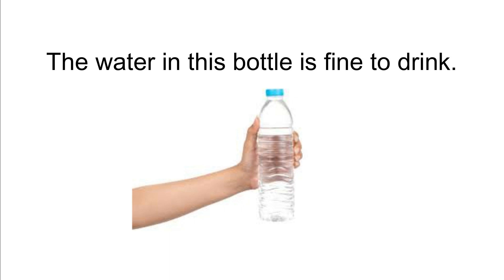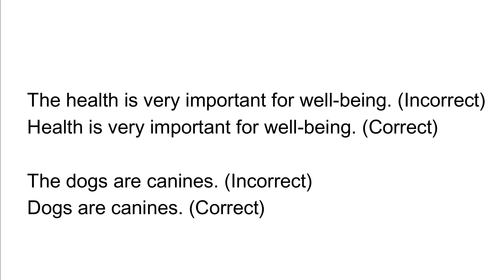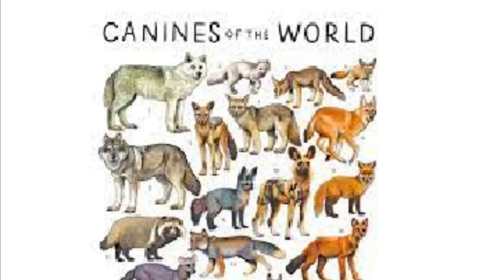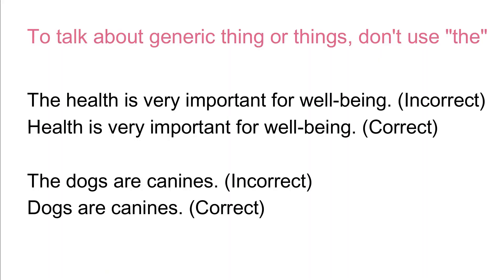Compare the following sentences: 'The health is very important for well-being.' — Incorrect. 'Health is very important for well-being.' — Correct. 'The dogs are canines.' — Incorrect. 'Dogs are canines.' — Correct. What is important for well-being is the generic health, and all dogs are canines. Since we are talking about generic health and dogs, we should not use the definite article.